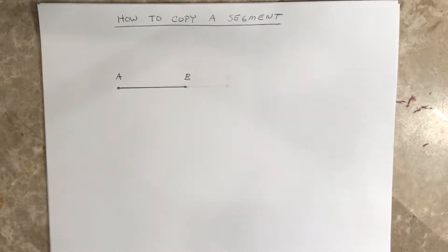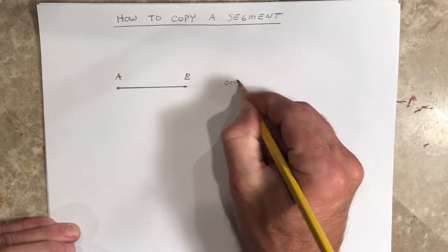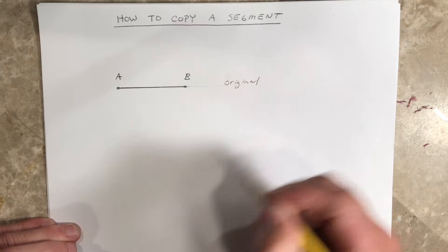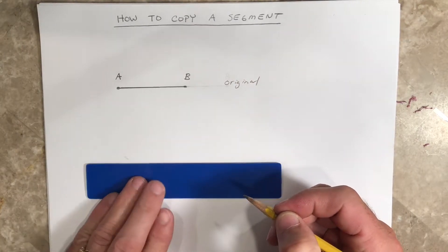All right, first video here: how to copy a segment. So I'm given a segment AB, and this is the original. This is what you're given, and then right below there you're going to take a straightedge.